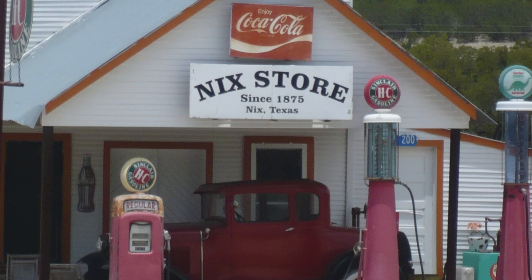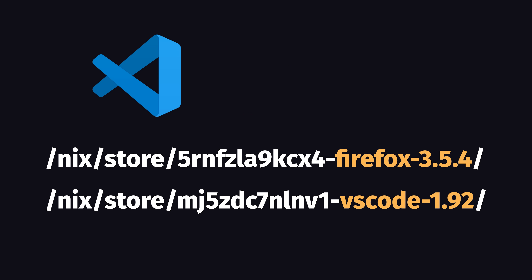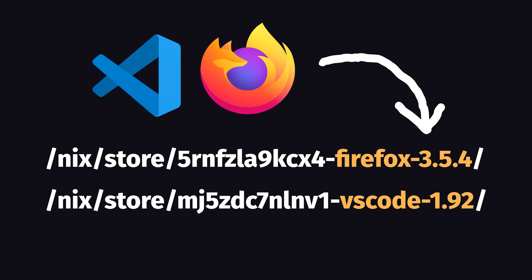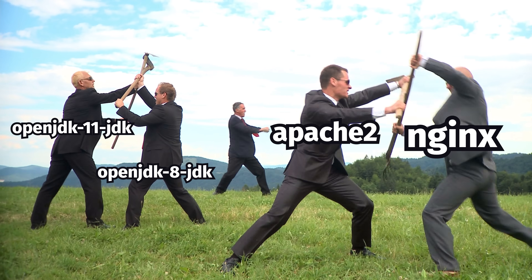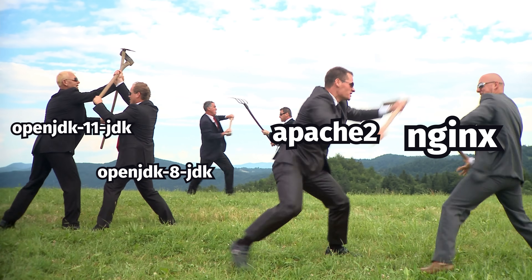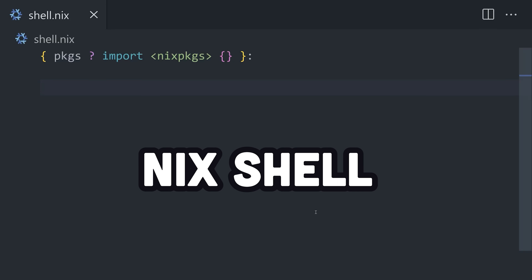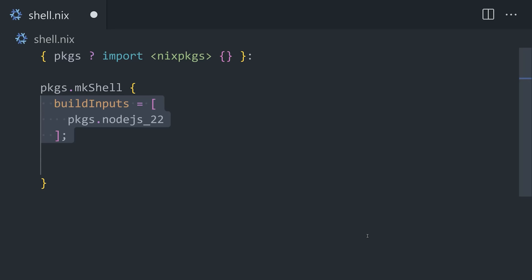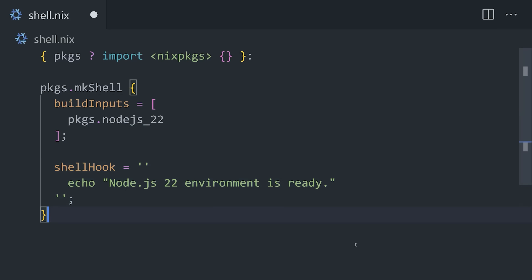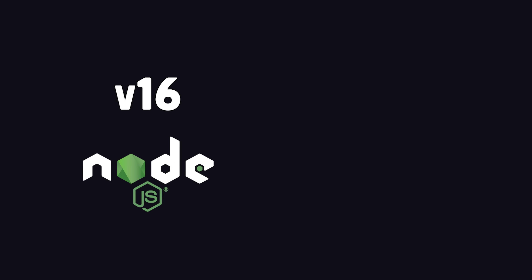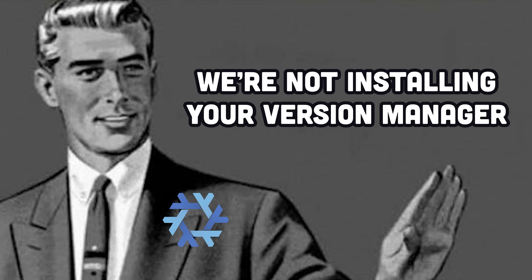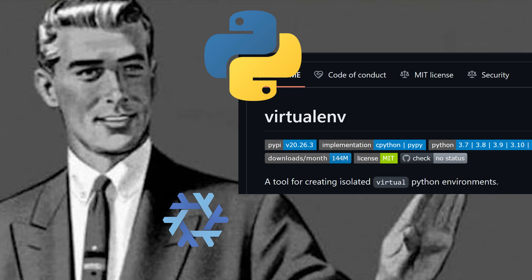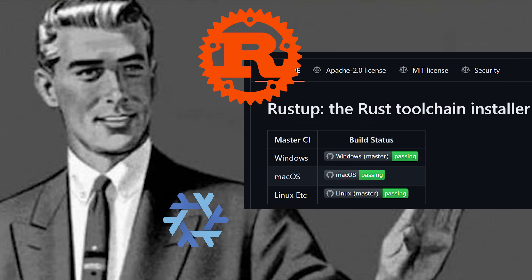This is possible because in the Nix store, each package and its dependencies are stored in a separate directory identified by a unique cryptographic hash, which guarantees that packages won't interfere with each other. And with Nix shell, you can create unique environments for all of your projects — side-by-side installation for all of your tools and their different versions without the need for version managers like nvm, virtualenv, or rustup.